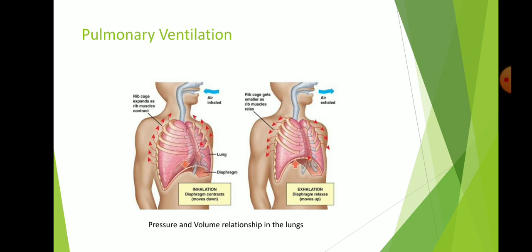This is the basis of pulmonary ventilation, which occurs when changes in the volume of lungs create pressure gradients. This pressure difference causes air to move into or out of the respiratory tract. When the lungs expand, pressure falls inside the airways and air moves into the respiratory tract.